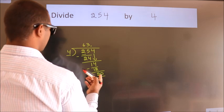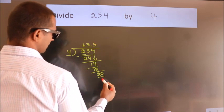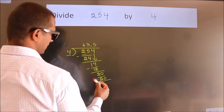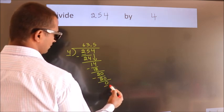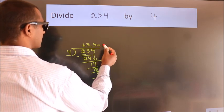When do we get 20 in the 4 table? 4×5=20. Now we subtract. We get 0. We got remainder 0. So this is our quotient.